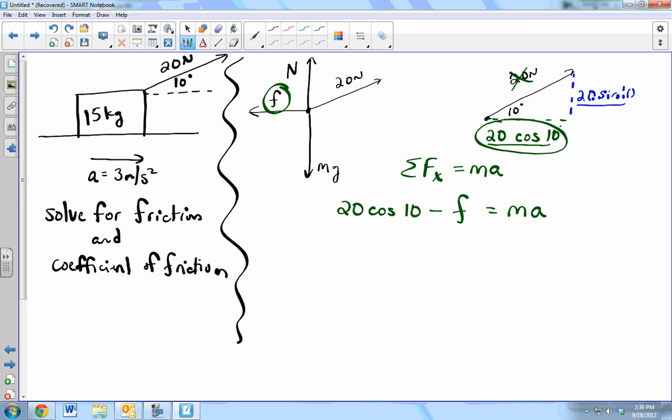20 cosine 10 is 19.7. Minus the friction. Equals the mass. 15 kilograms times acceleration. Give it to us in the problem. So 19.7 minus friction equals 45 newtons. So friction equals.